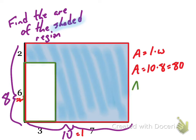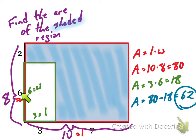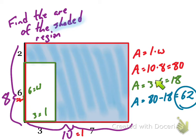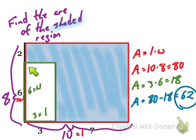Now let's look at this little inner rectangle. We know its dimensions: the length of this side is six, and the length of this side is three. So six times three — we already talked about that — three times six is eighteen. If I subtract those two things, because I want just the shaded region — the whole thing minus this inner part — that gives us sixty-two.